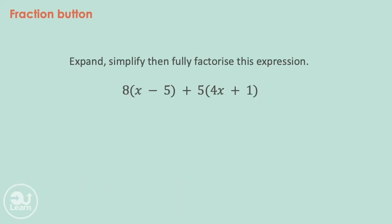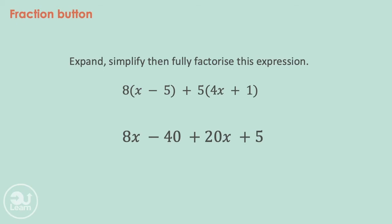Let's have a look at this question: expand, simplify, then fully factorize the expression 8(x minus 5) plus 5(4x plus 1). We start by multiplying x and negative 5 by 8 to give us 8x minus 40. We multiply 4x and 1 by 5 to give us 20x plus 5. We simplify by adding 8x to 20x and negative 40 to positive 5, giving us 28x minus 35.